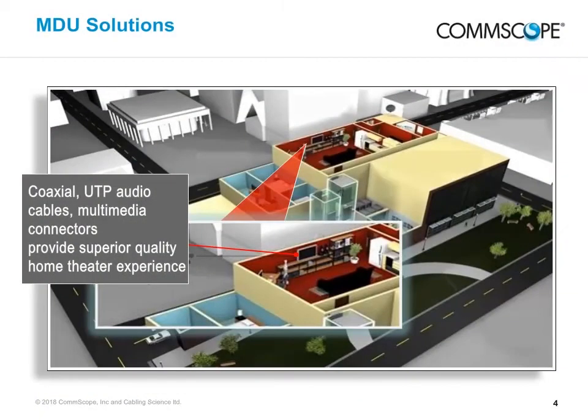This graphic details the products that we offer for network integration of audio and video in a home theater system using coaxial, UTP, and audio cables. Many systems today employ CAT-6 cables for audio distribution and a growing technology known as IPTV — online TV through the internet — which does not depend on shared bandwidth. Coaxial, UTP, audio cables, and multimedia connectors provide a superior quality home theater experience.